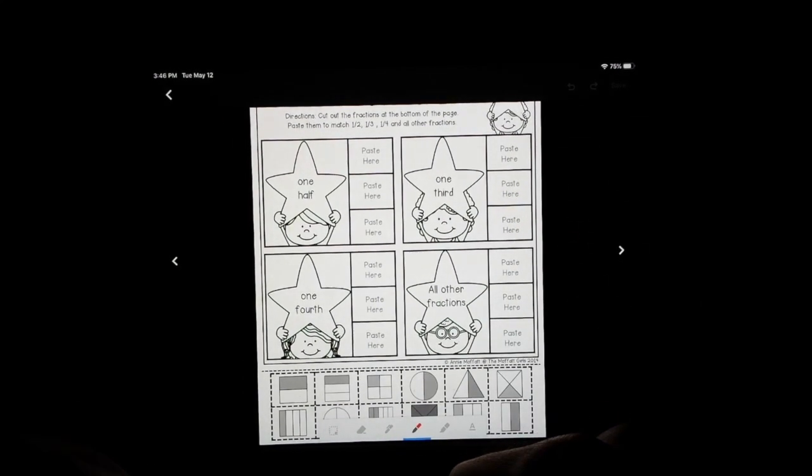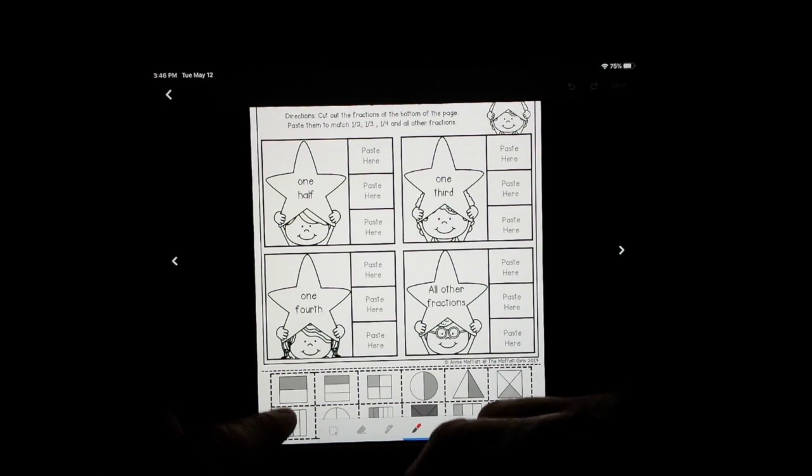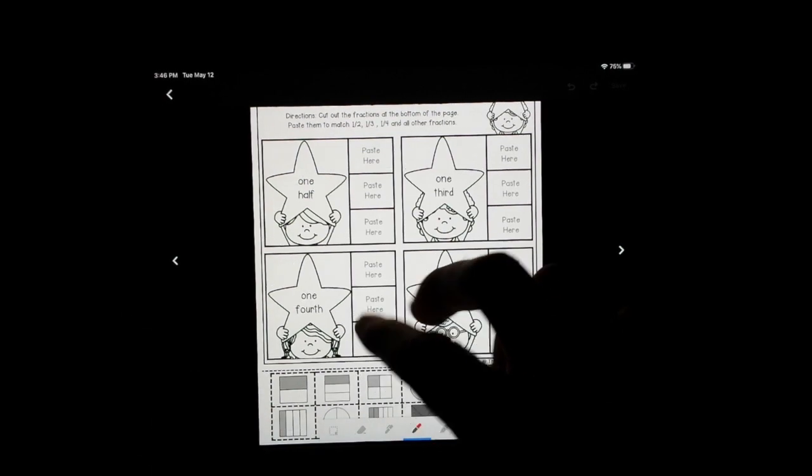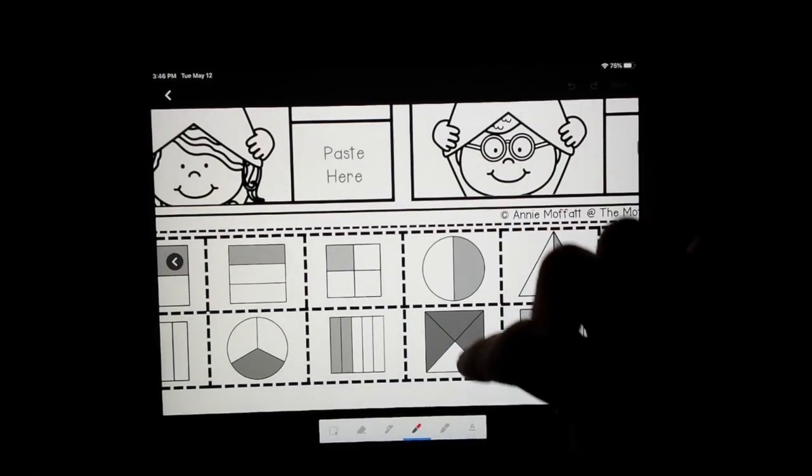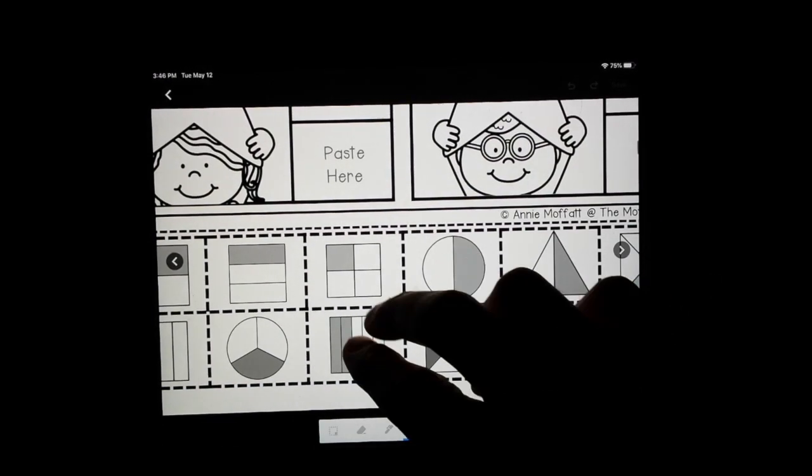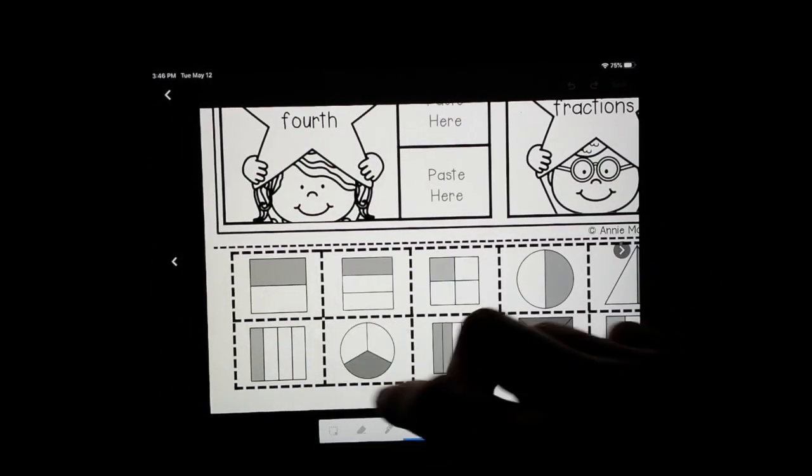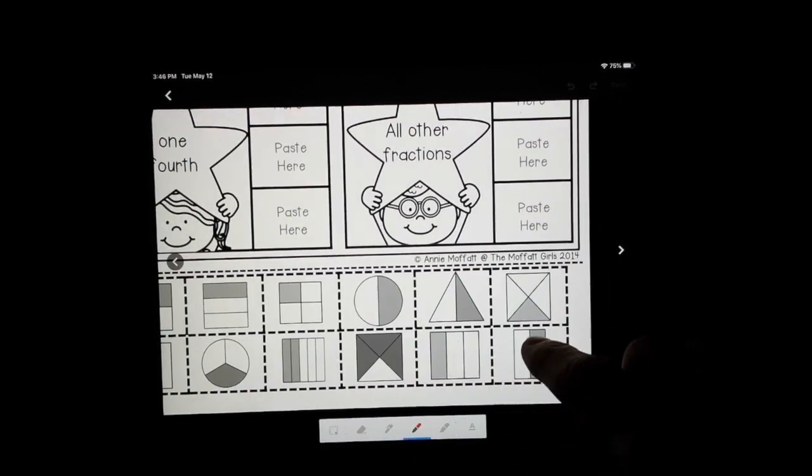Another cutting and pasting, but yet again you can go ahead and just draw them yourself if you like. So one half. There are going to be three different ways of representing one half down here. So we've got the circle, see if we can find them all, the square, and the rectangle.